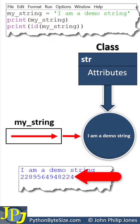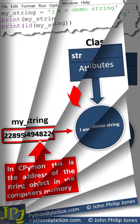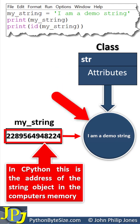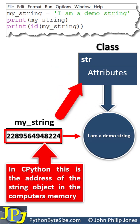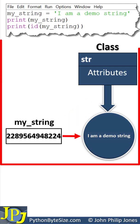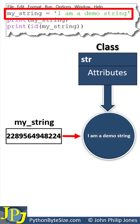So this ID can be placed here. This is the address of the string object in the computer's memory. This object is based upon this class, and the object is referenced by this address. This represents what we have after this executes.